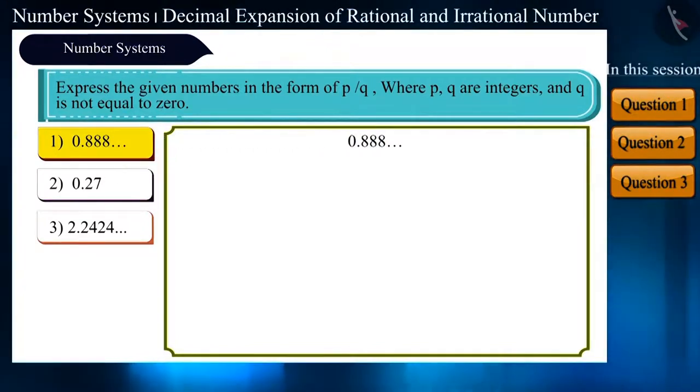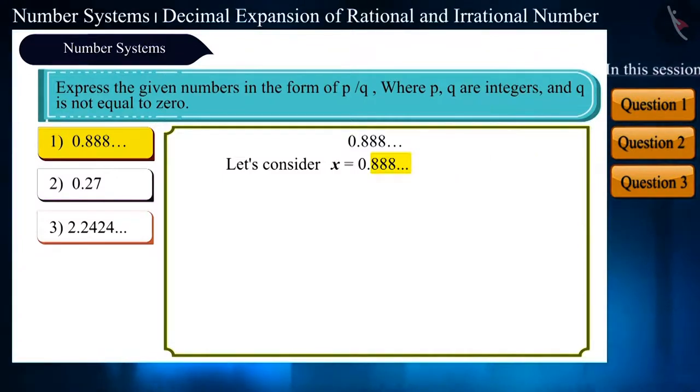Let's take the first number, 0.888. Let's consider it as x. Now, we will see whether a number or a group of numbers is repeating after the decimal. Here, the same number 8 is getting repeated.